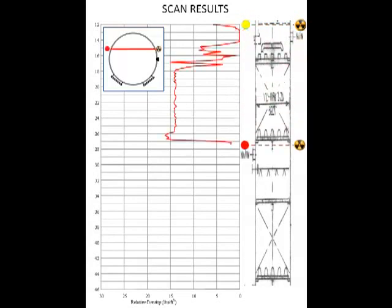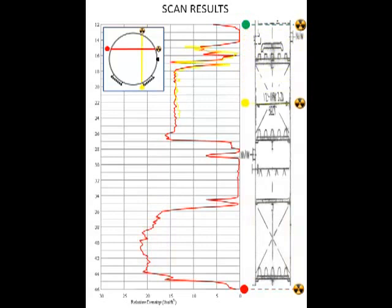As with each of the scans, a radioactive source and a detector are lowered down opposite sides of the tower to produce a density profile. Here we can see absorptions for the distributor, the upper packed bed, and the lower packed bed. The second scan shows a density profile similar to the first scan.